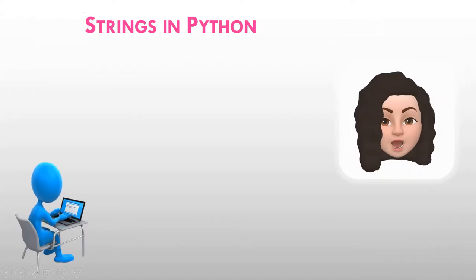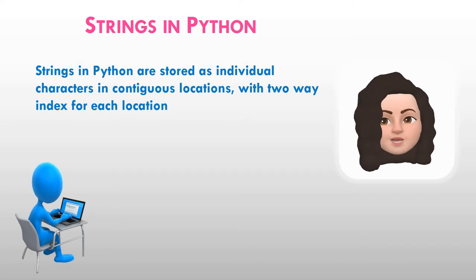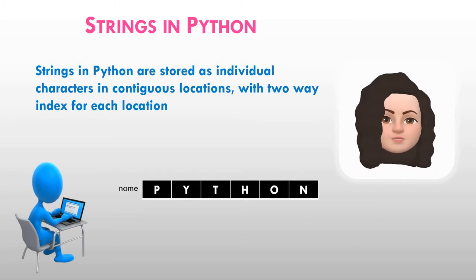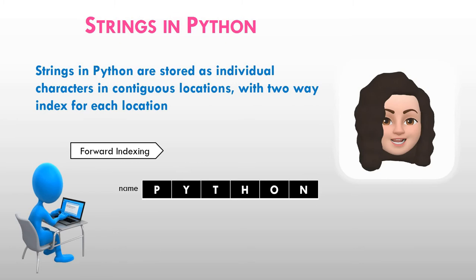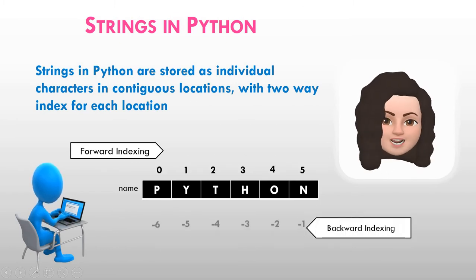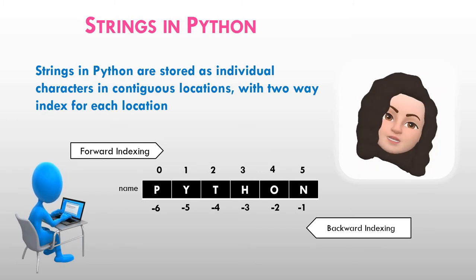The strings which are created in Python will be stored as individual characters in contiguous memory locations, with two-way indexing for each location. For example, if we create a variable 'name' which holds the value 'python', this will be saved in memory as p, y, t in contiguous memory locations, and each character will have two indexes — one using forward indexing and the other using backward indexing.